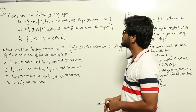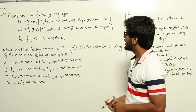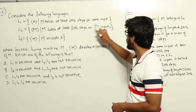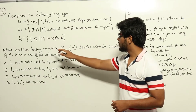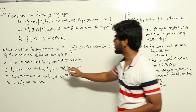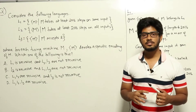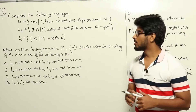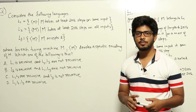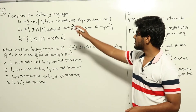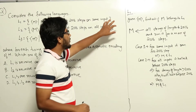Consider the following languages: L1 is the set of all M such that M takes at least 2016 steps on some input; L2 is the set of all M such that M takes at least 2016 steps on all inputs; L3 is the set of all M such that M accepts epsilon, where for each Turing machine M the encoding is given. The question asks which of these languages are recursive, coming from the topic of recursive languages and Turing machines.